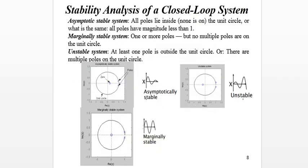Stability can be divided into three main criteria. First, asymptotically stable — the system is stable when all poles lie inside the unit circle and all poles have magnitude less than one. Zeros are represented by round shapes and poles by 'x'. As long as poles are inside the unit circle, the system is considered stable, as shown in the graph.